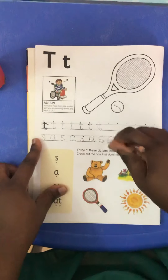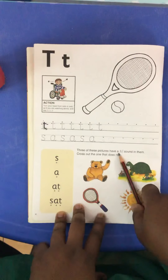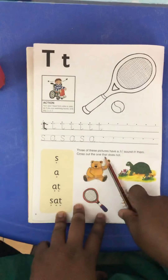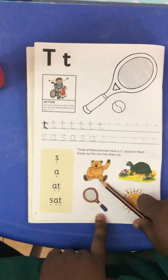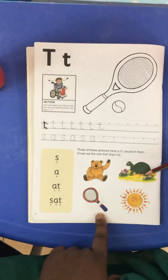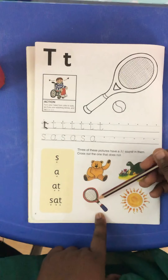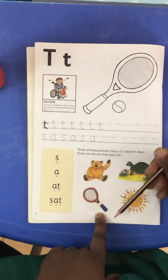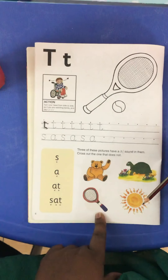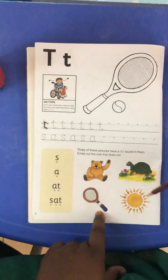Now we come down here — three of these pictures have the T sound in them, cross out the one that does not. We have Teddy — can you hear the T sound in Teddy? Yes! Turtle — can you hear the T sound in turtle? Yes! Tennis — can you hear the T sound in tennis? Yes! Sun — can you hear the T sound in sun? No! So we cross out sun. Three pictures have the sound and one does not.